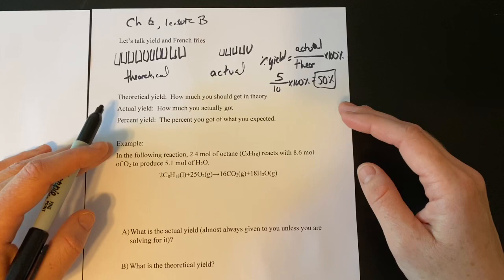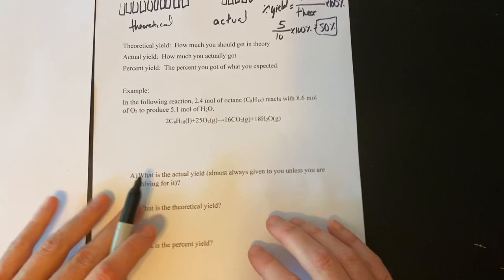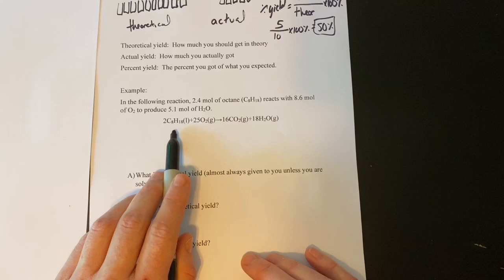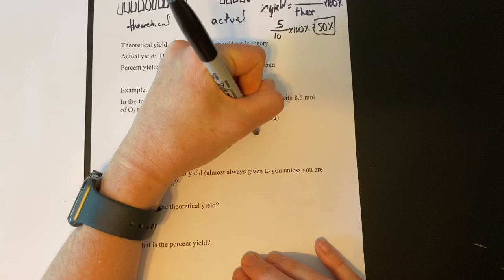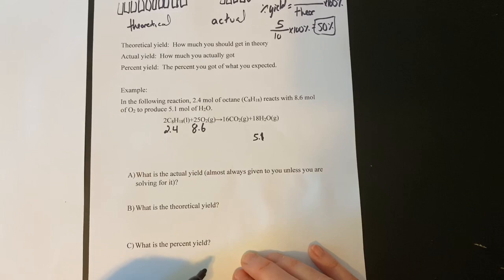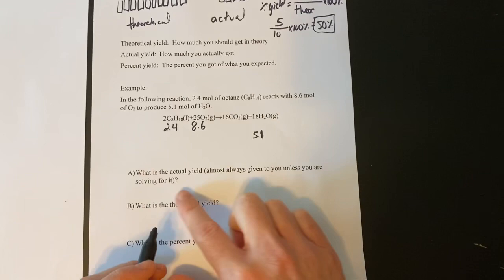All right, so let's go through this problem here and kind of review a few little things. It says, in the following reaction, we have 2.4 mol of octane. If you remember, I like to write the moles underneath each respective thing. So 2.4 mol of octane reacts with 8.6 mol of O2 to produce 5.1 mol of water. Well, in this case, I'm going to put my 5.1 over here. I'm going to put it a little lower, because it's not what I was starting with. It's what I ended up getting. So I like to kind of separate it.